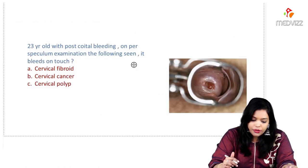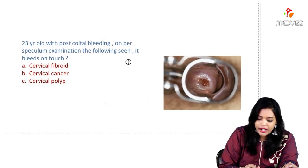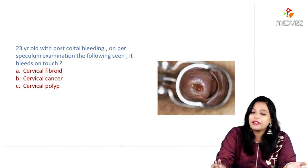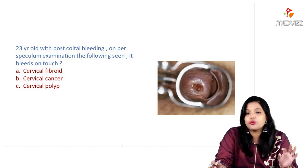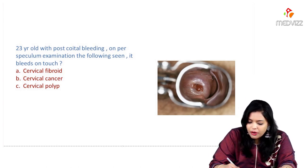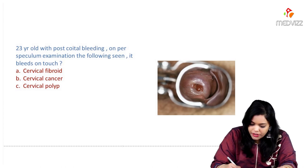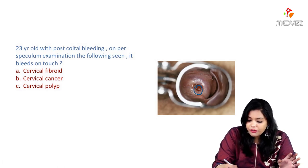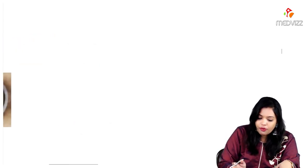Next question: a 23-year-old with post-coital bleeding; on per speculum examination it bleeds on touch. History-wise this sounds like a Ca cervix question, but looking at the image you can see a small thing popping out from the cervix. That small protrusion from the cervix is not Ca cervix.